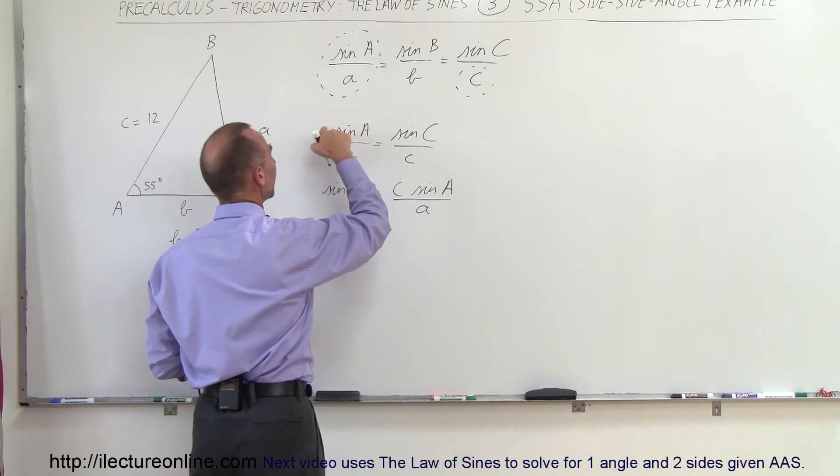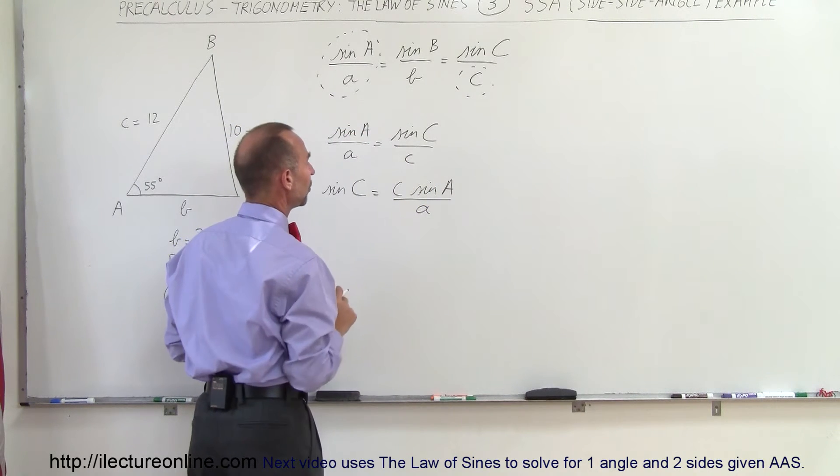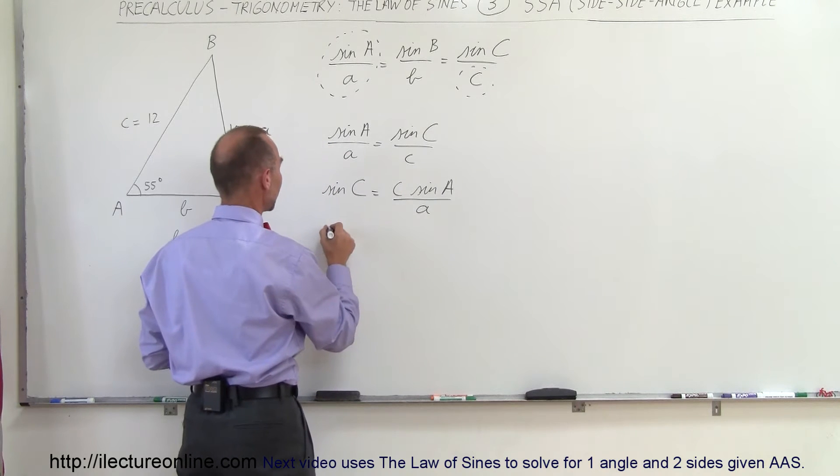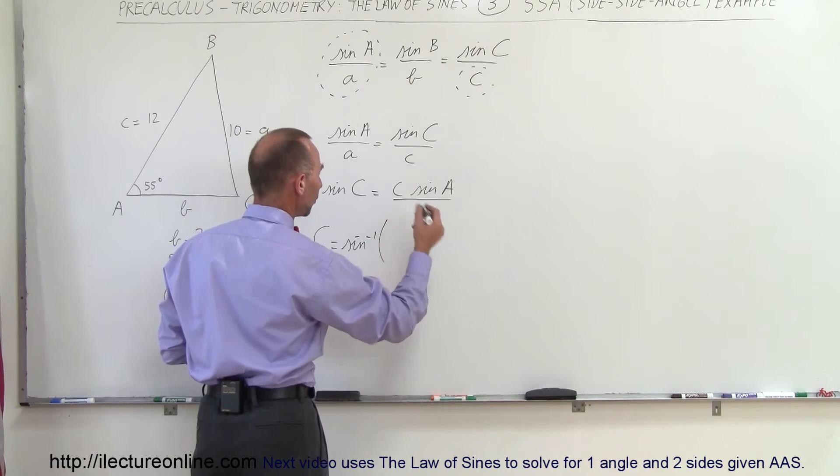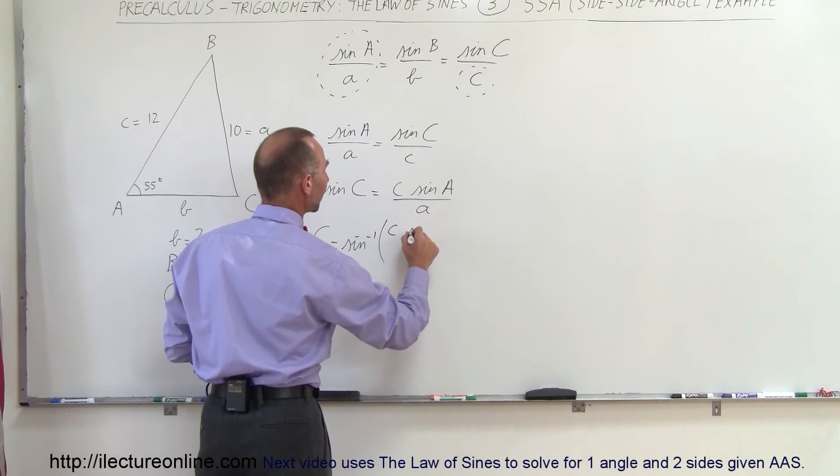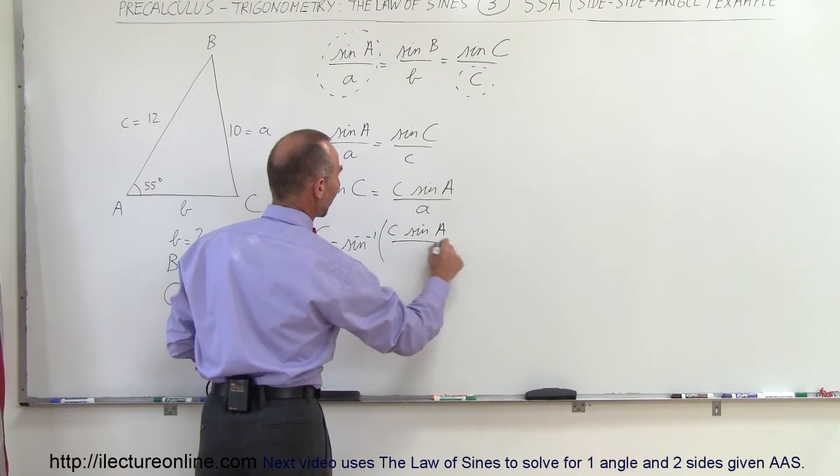So I took the C, brought it over here, moved that and then turned the equation around. So now the angle C is equal to the arcsine of the ratio of side C times the sine of A divided by side A.